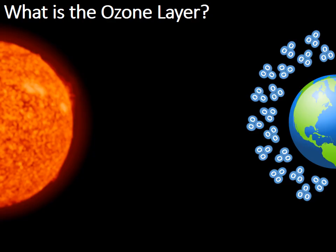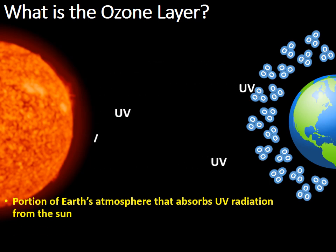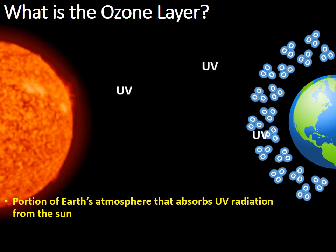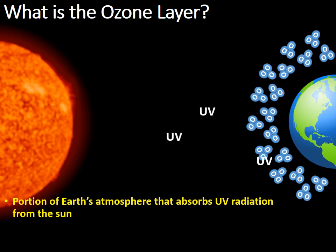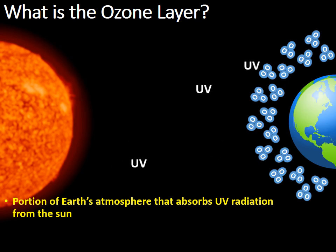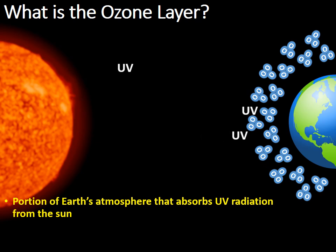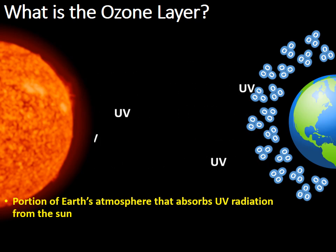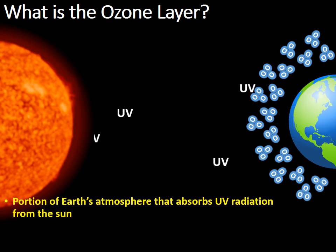What is the ozone layer? It's the portion of Earth's atmosphere that absorbs UV radiation from the Sun. Like you see in the animation, the ozone layer acts like a shield that surrounds the Earth and tries to prevent the incoming UV rays from striking the surface of the Earth. As wonderful as the ozone layer is, it's not 100% effective — some UV radiation does strike the surface of the Earth — but it does a really good job in protecting the Earth from incoming UV radiation.